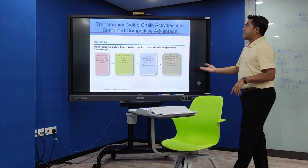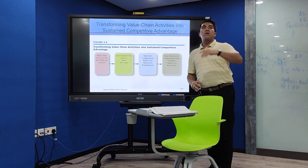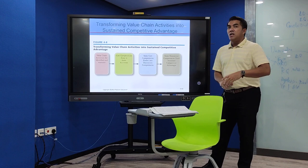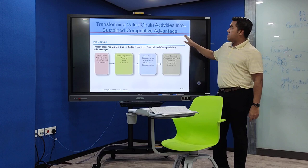This is how you can transform value chain activities. First, identify all the value chain activities involved. Then determine which one is your core competency — for example, if your core competency is in marketing, you can develop it into a distinctive competency so that people cannot copy the way you promote your product. Finally, that core competency can yield a sustainable competitive advantage.